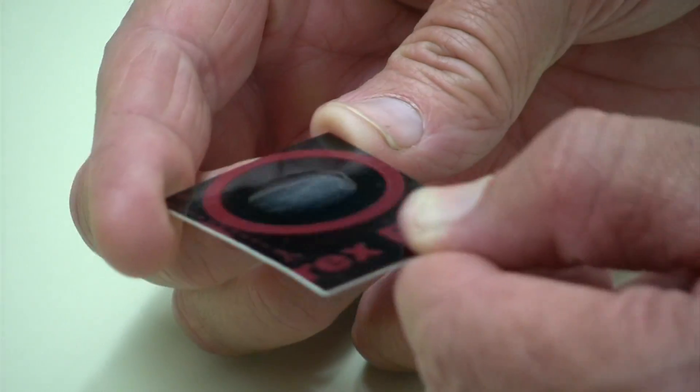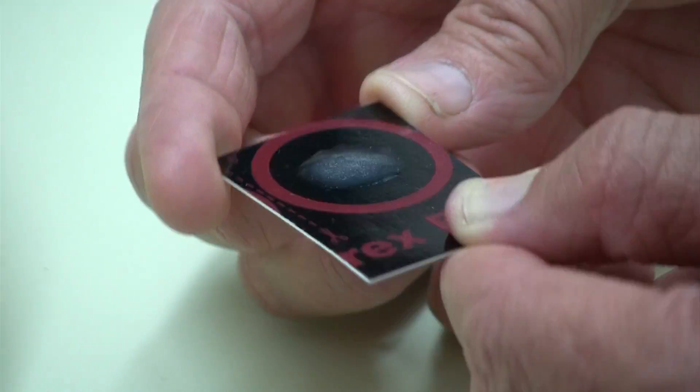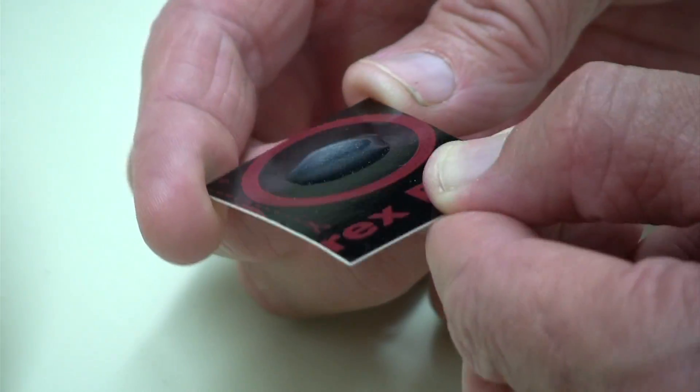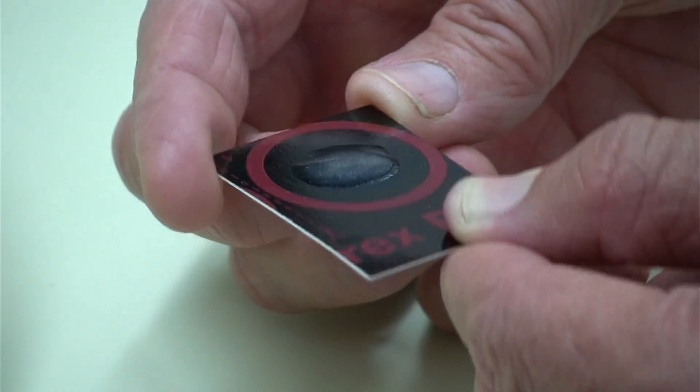If it clumps, it will be Staph aureus. This test is often used now instead of the coagulase test.